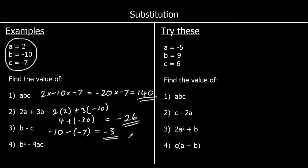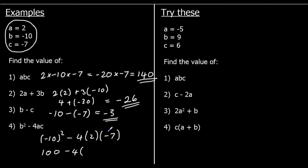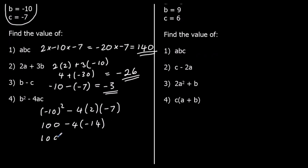And question 4: b squared minus 4ac. So we've got negative 10 squared minus 4 times 2 times negative 7. Negative 10 squared — negative 10 times negative 10 — is positive 100. And it's minus 4 times 2 times negative 7. 2 times negative 7 is negative 14, so it's negative 4 times negative 14. Negative times a negative is positive. Doubling: 2 times 14 is 28, double 28 is 56. So 100 plus 56 is 156.